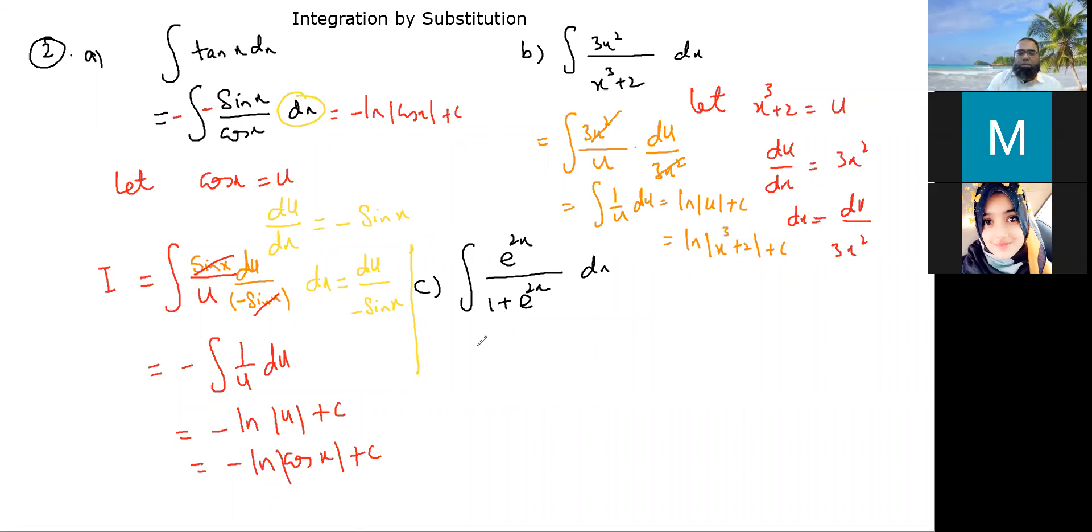Similarly, over here, you will say that let 1 plus e raised to the power 2x, that is going to be u, okay? And then, if you differentiate this with respect to x, this is going to be du by dx. Now, look at this interesting thing over here. You guys know that you had to put a 2 here because this derivative is going to be 2 e raised to the power 2x, so you have to put a 2 here, and then you have to put a half here. Now, that half will be automatically adjusted here. Just look at this.